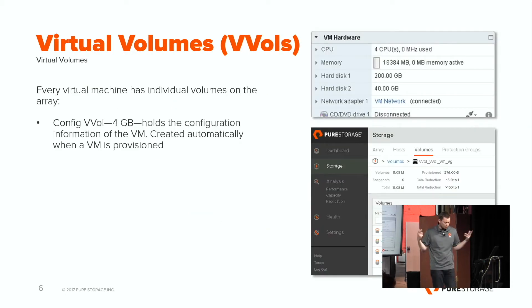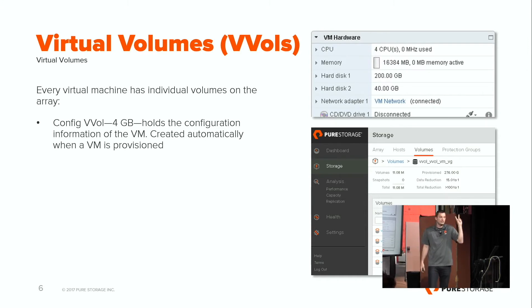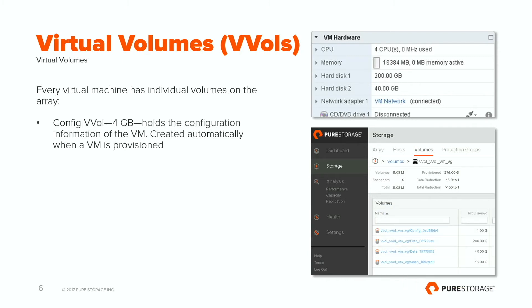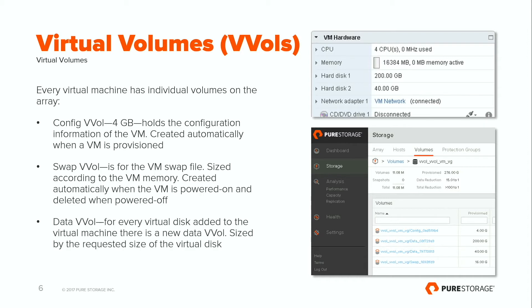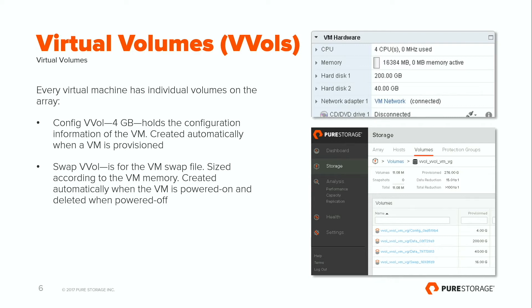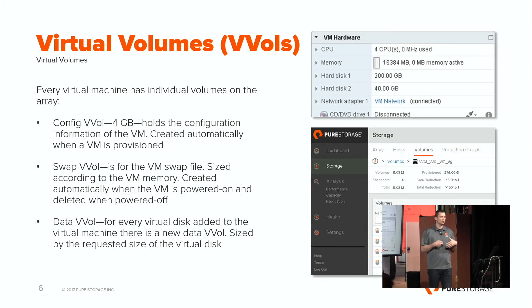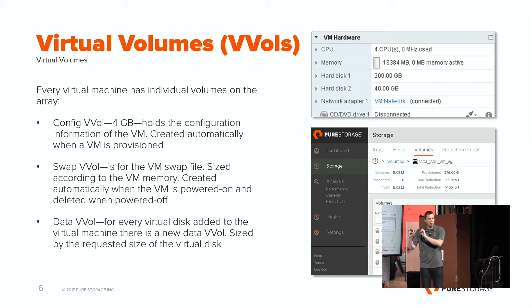So first off, what is a VVol? When you create a VVol-based virtual machine, it creates at least two VVols. You have your config VVol, four gigs in size — this holds configuration information: your VMX, logs, a few things like that. A swap VVol gets created when you power it on and automatically deleted when you power it off. And then of course the all-important data VVol — every virtual disk you add on a VVol datastore is going to be a data VVol, a volume on the array. This is what you can replicate and restore.